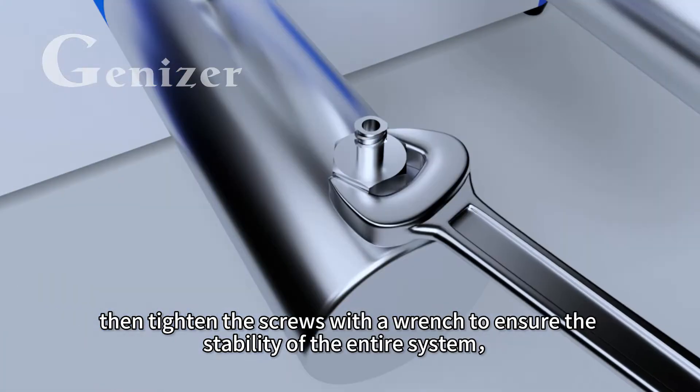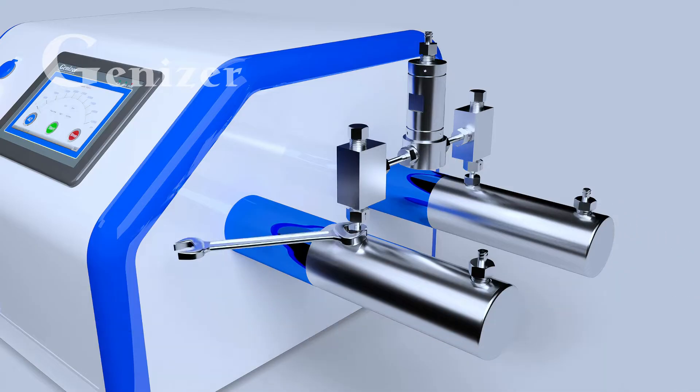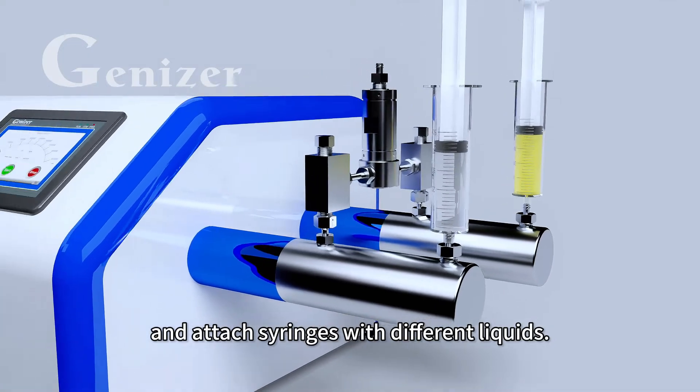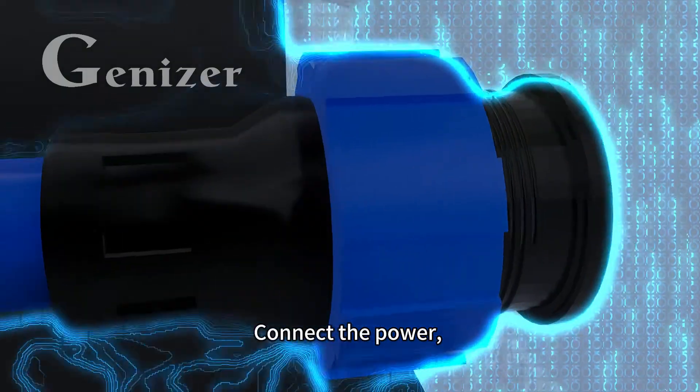Then tighten the screws with a wrench to ensure the stability of the entire system, and attach syringes with different liquids. Connect the power.